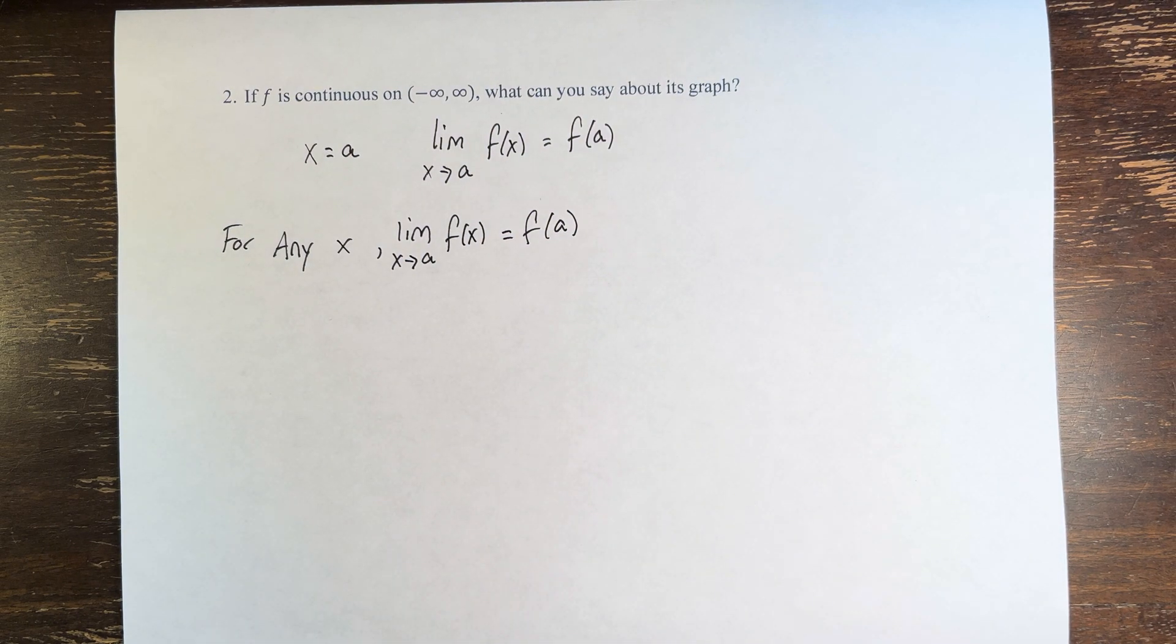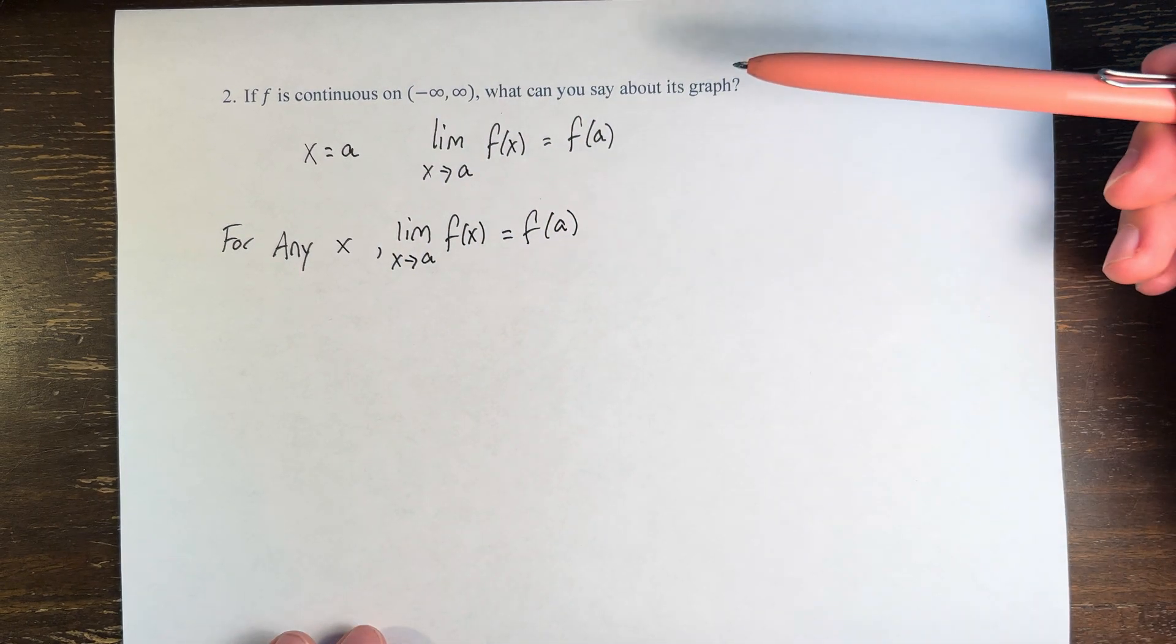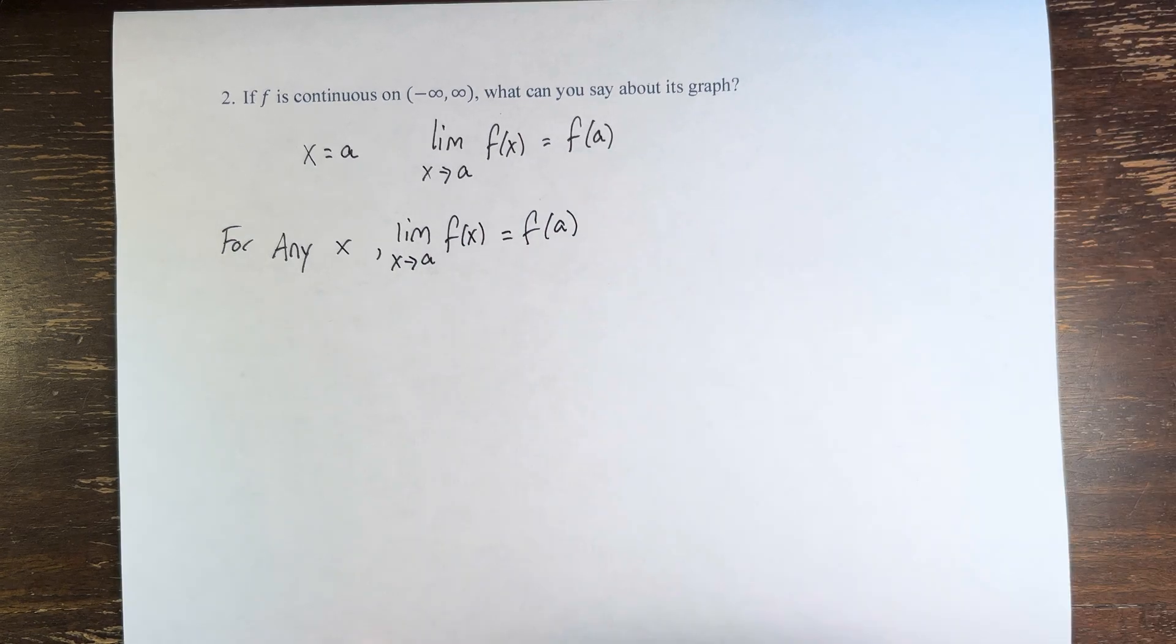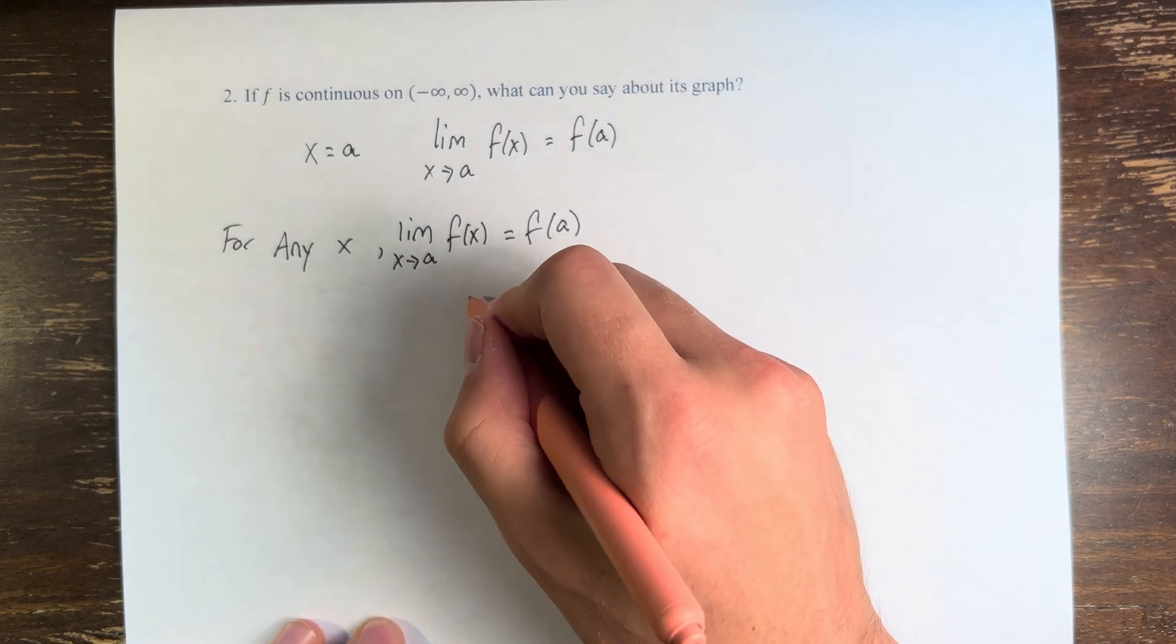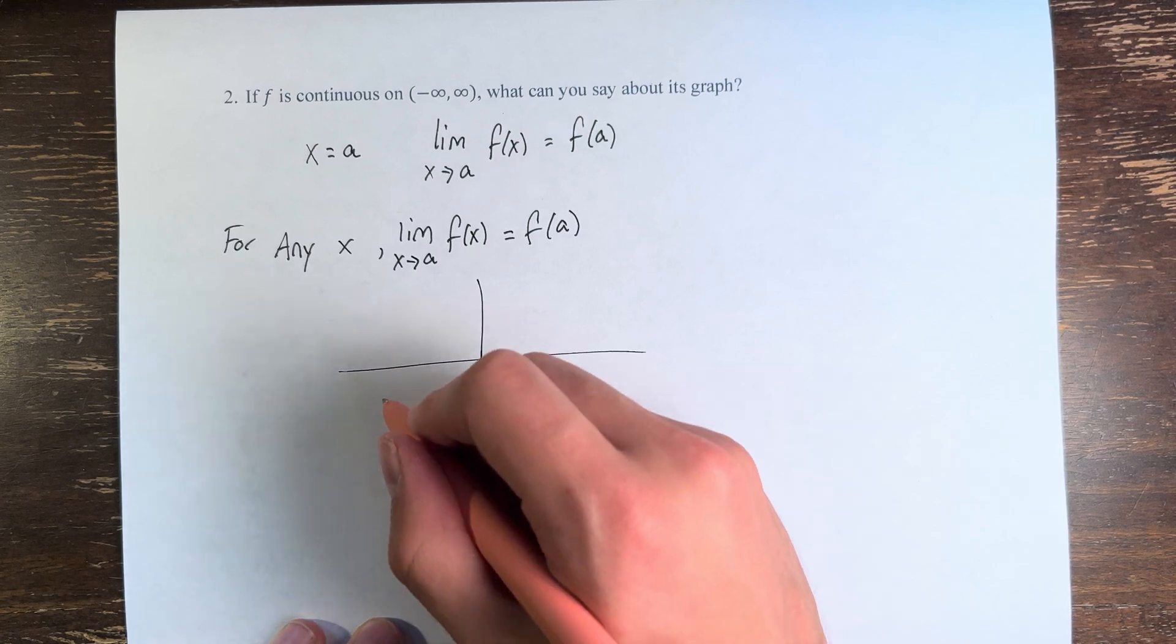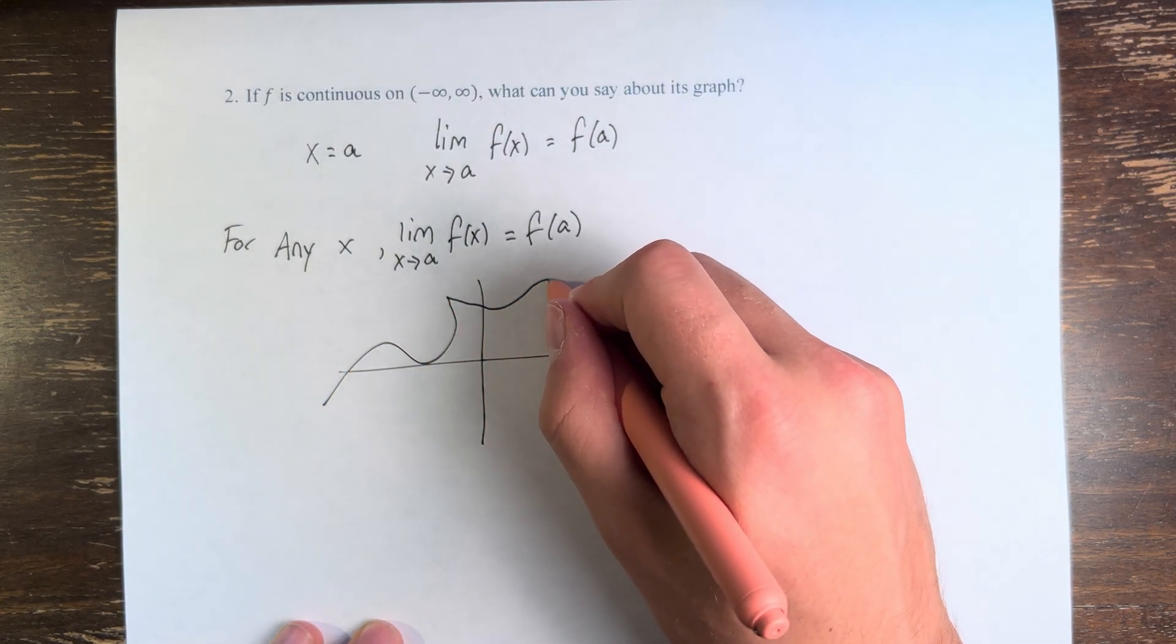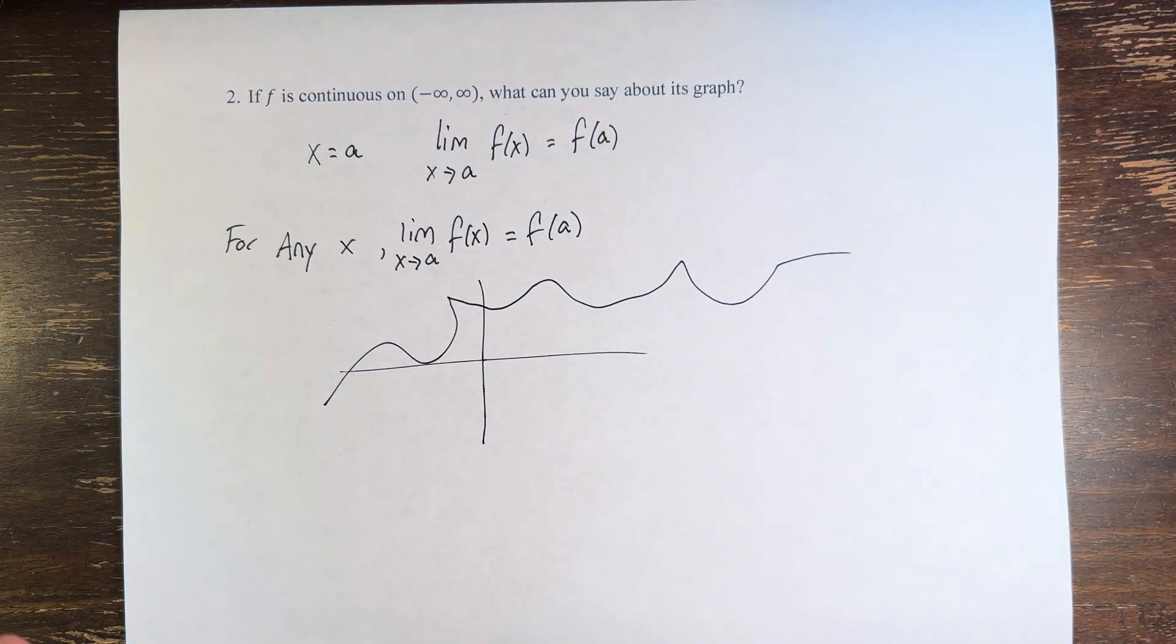And this means that the graph is an unbroken curve. What does that mean? It means the function can take any shape, it can go all different directions.